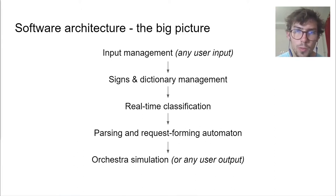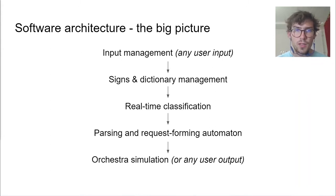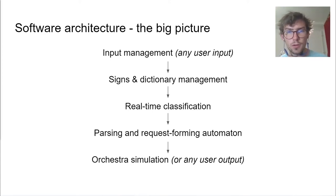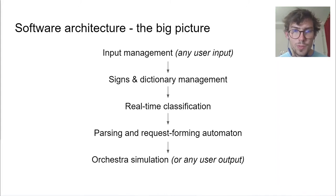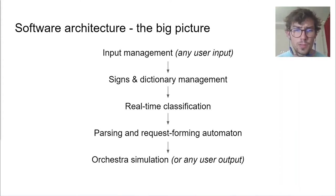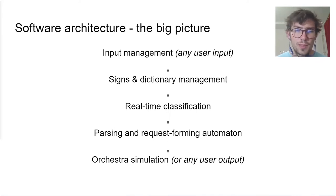If we take a look at the global program, it is made of independent layers that each achieves specific functions. First comes the input management layer, which receives data from the inputs, computes the features and distributes them to different classification models. Then there is the sign dictionary layer, where the user can define, record, store and load signs. At the core of the structure, there is the classification layer that performs individual sign recognition, but also the parsing and request-forming automaton that parses expressions based on the sound painting grammar and outputs instructions to different devices in OSC format. Finally, there is also the orchestra simulation part, which in its current form I consider more as a demonstration module.